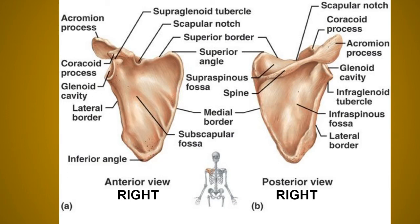By these features, you can see that the scapula shown on the screen is the right-sided scapula, because you can see the lateral border and the dorsal surface. By all these structures, we can say that it is the right-sided scapula.